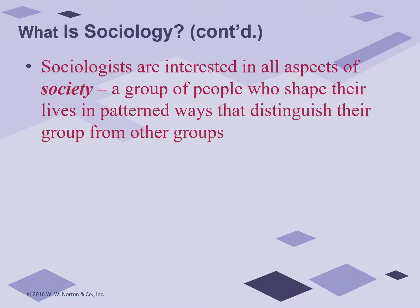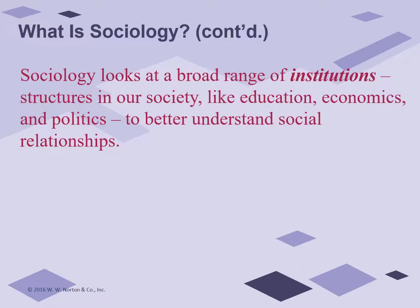Sociologists are interested in all aspects of society — in other words, we're talking about a group of people who shape their lives in patterned ways that distinguish their groups from other groups. Sociology looks at institutions, and you'll hear this word a lot in the course of study. There are many different institutions that we consider in sociology, like education, economics, politics, religion, and family.